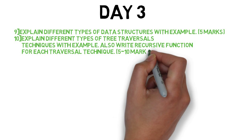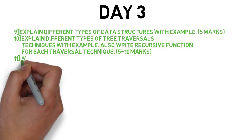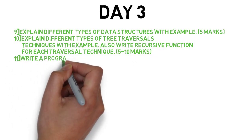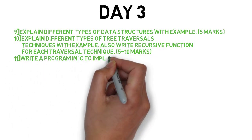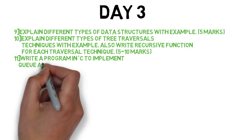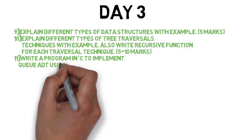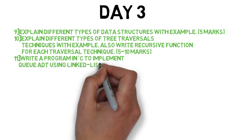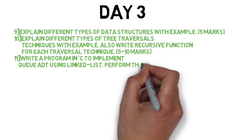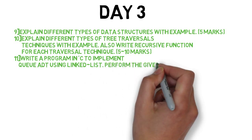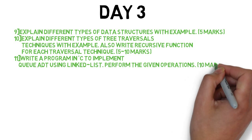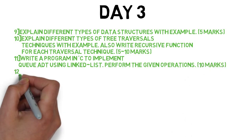The 11th question is: write a program in C to implement a queue using a linked list. A queue should be created first and then you have to perform various operations. You can do it for 10 marks.